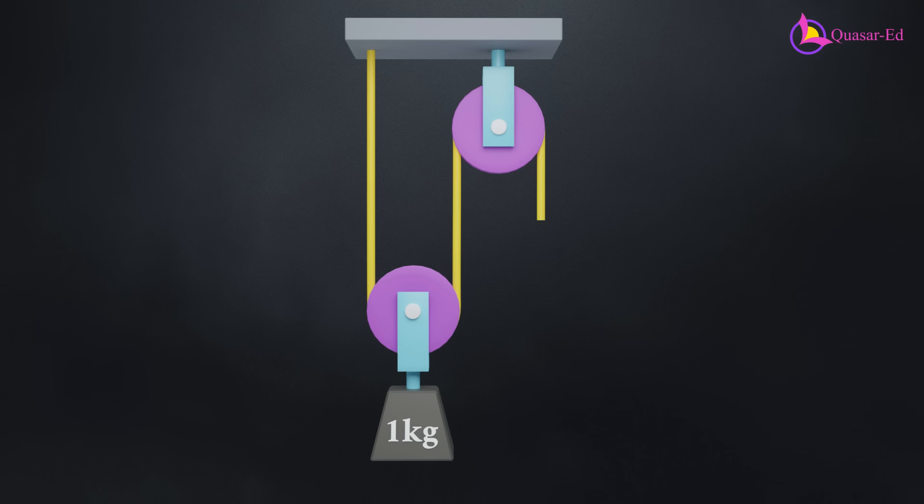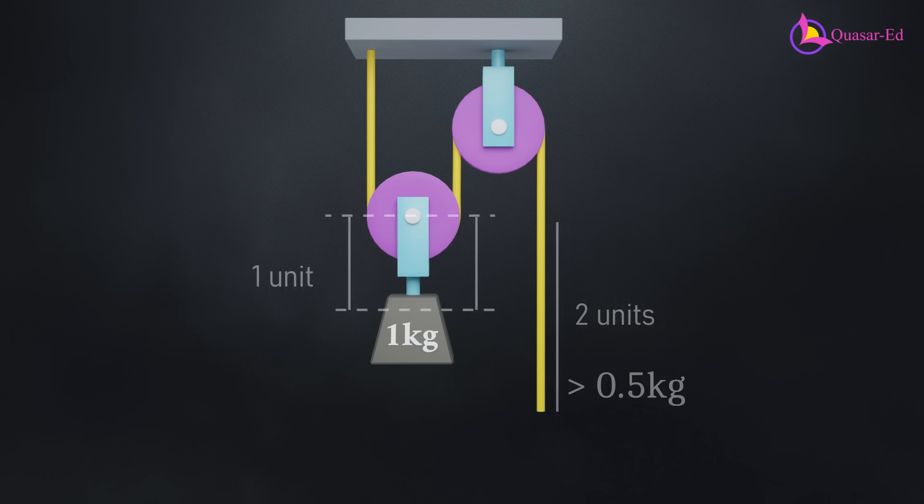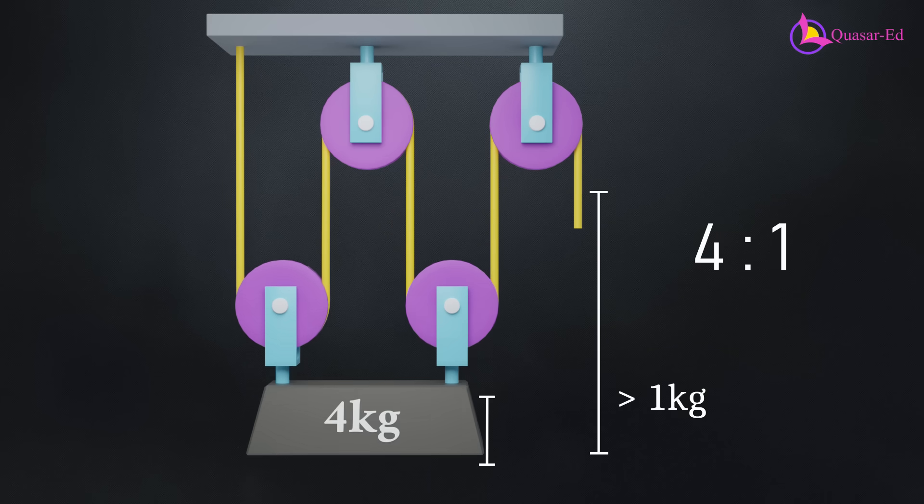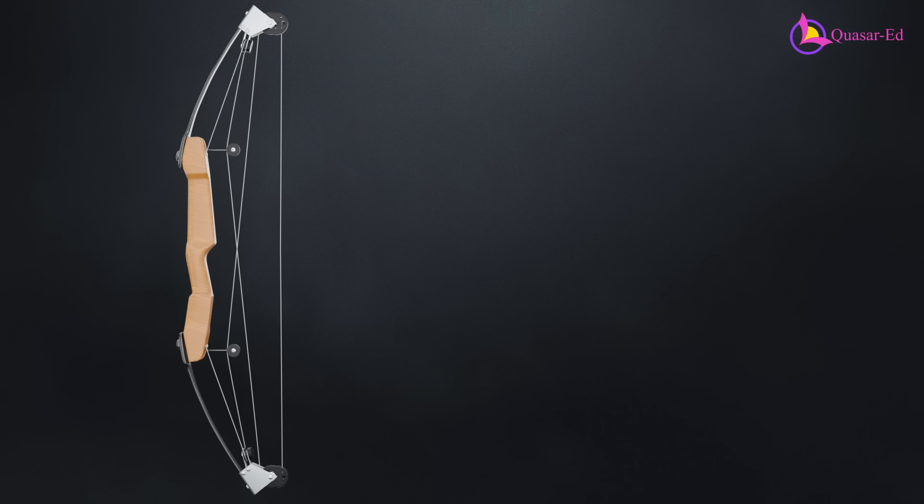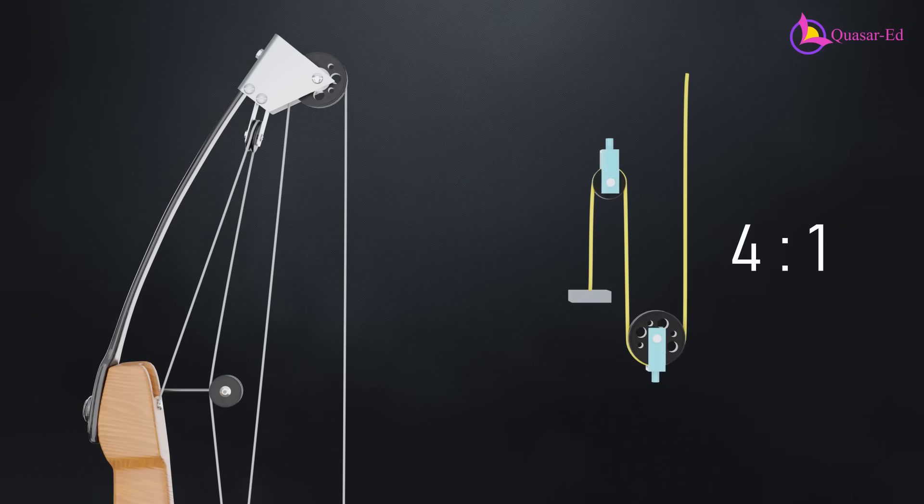For example, in a single pulley system, moving an object by one unit requires both sides of the string to contribute one unit each, meaning the total pull distance is two units. Adding another pulley increases the force advantage to a four-to-one ratio, meaning four times the force can be applied while requiring four times the pull distance. This principle can be observed in the first compound bow's pulley system, which provided a similar four-to-one mechanical advantage on each limb.